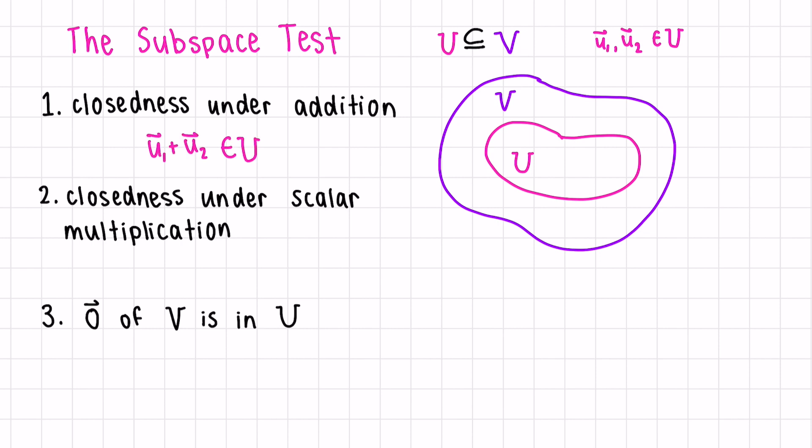Then closeness under scalar multiplication. So let's say A is an element of all real numbers. That will be our scalar. If you do A times U1, this is also contained in our set U.